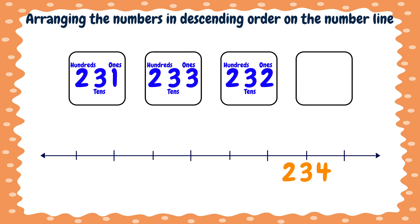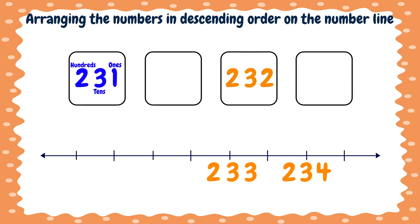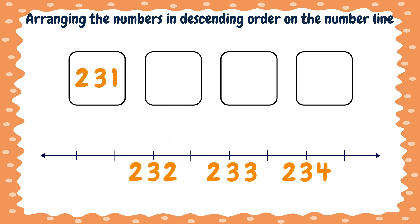Now we have three numbers left. We are comparing the ones places because the hundreds and tens are equal. So here we have one, here three, and here two. Which number is the largest? The number three. Well done. So the number two hundred thirty-three is the largest, so we will put it here. We have two numbers left. Here is the number one and here is the number two. Which one is the largest? The number two. So the number two hundred thirty-two is the largest, we will put it here. As for the number two hundred thirty-one, it is the smallest, so we will put it here.